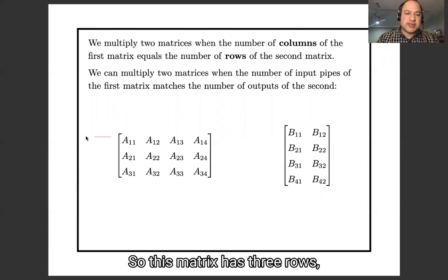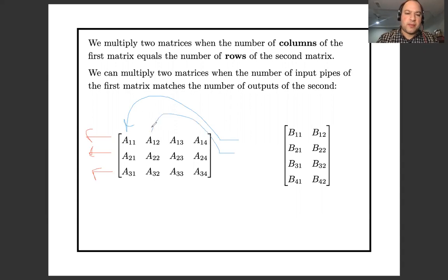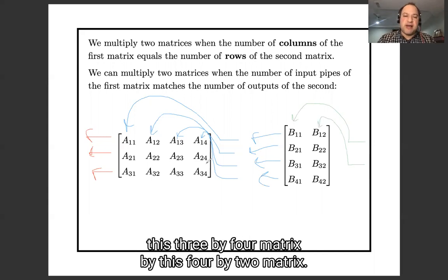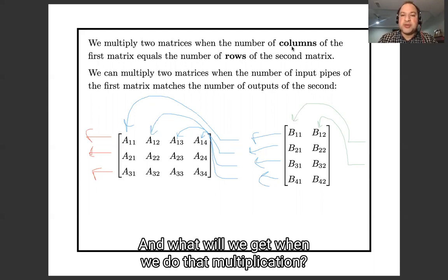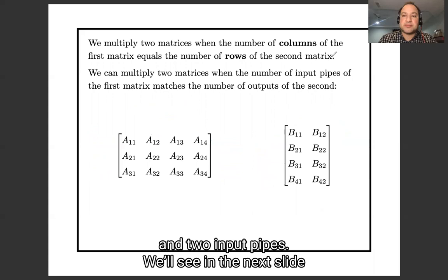So let me draw that in a picture for you. This matrix has three rows, three outputs, and has four inputs. And we are permitted to multiply this three by four matrix by this four by two matrix, because the number of input pipes here matches the number of output pipes here. And what will we get when we do that multiplication? We'll get a matrix which has three output pipes and two input pipes. So that's what we'll see on the next slide.